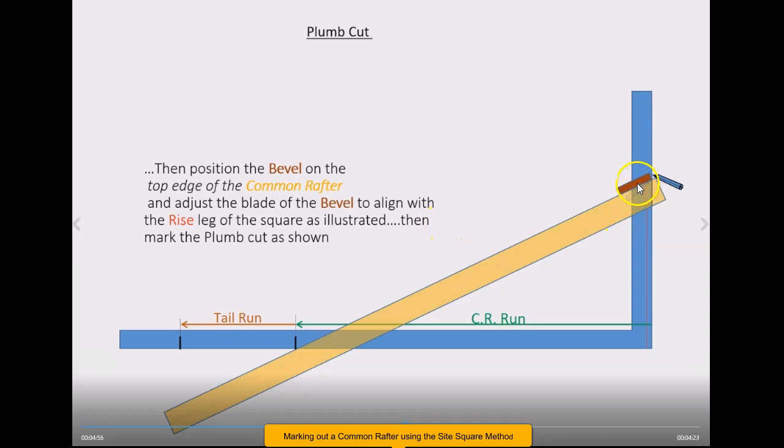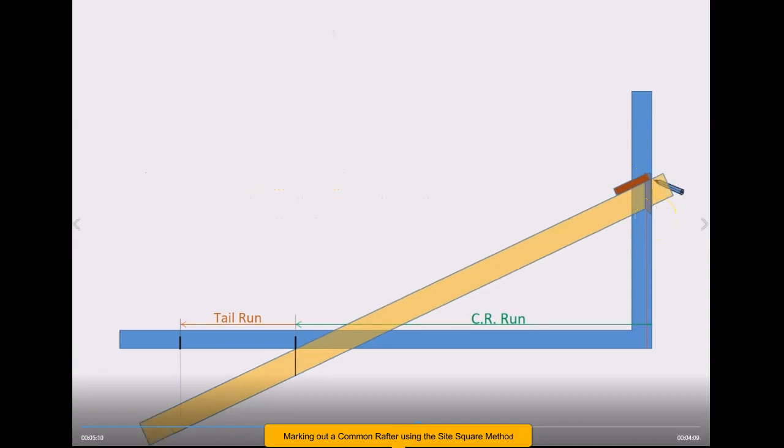Usually you put your bevel up there and you'll swing the blade of your bevel so it aligns with this rise leg. That means you then have the plumb cut angle. From here to here is your plumb cut angle, then you mark that with your pencil.